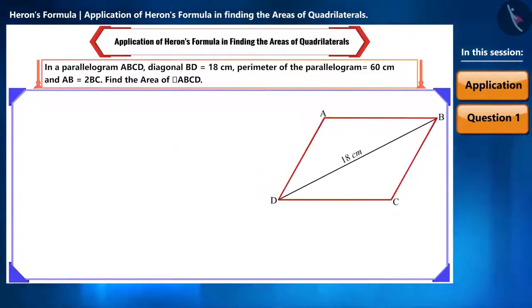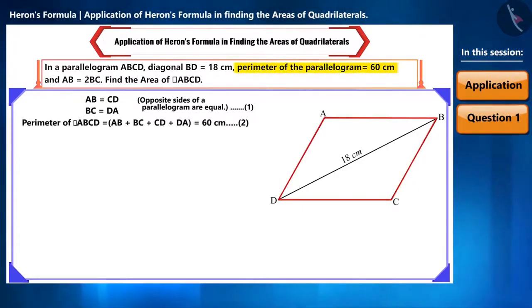ABCD is a parallelogram. That is, AB will be equal to CD, and BC will be equal to DA. Let's call it equation 1. We are also given the perimeter of the parallelogram. That is, AB plus BC plus CD plus DA equals 60 cm. Let's call it equation 2.